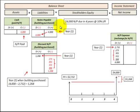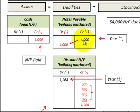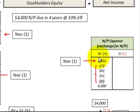Let's look at our journal entries for notes payable with a lump sum payment at the end of the term. Notes payable is a liability on the balance sheet. At the beginning of year one, we increased notes payable by $4,000. At the end of the fourth year, we paid off the notes payable and credited cash by $4,000 for the payment. For the associated expense account, at the beginning of year one we discounted the notes payable back to its present value of $2,732 and recorded that. In each year, we recorded an interest expense on that notes payable.